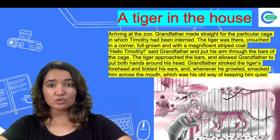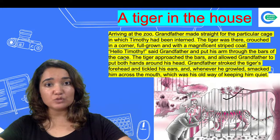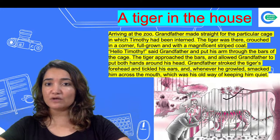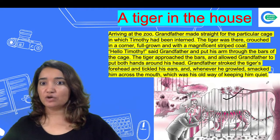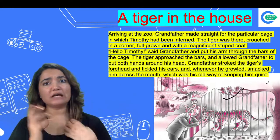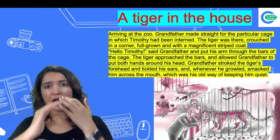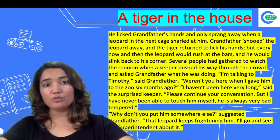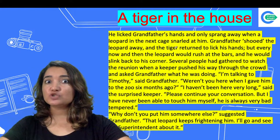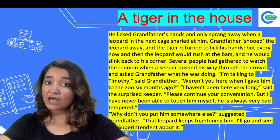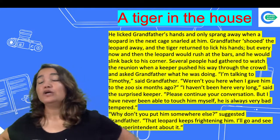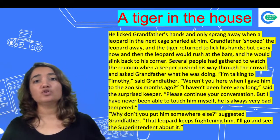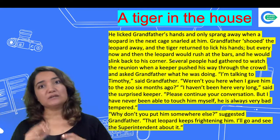'Hello, Timothy,' said Grandfather, and put his arm through the bars of the cage. The tiger approached the bars and allowed Grandfather to put both hands around his neck. Grandfather stroked the tiger's forehead and tickled his ears, and whenever he growled, smacked him across the mouth — it was his old way of keeping him quiet. The tiger licked Grandfather's hands and only sprang away when a leopard in the next cage snarled at him. Whenever the leopard rushed to the bars, the tiger would slink back to the corner.